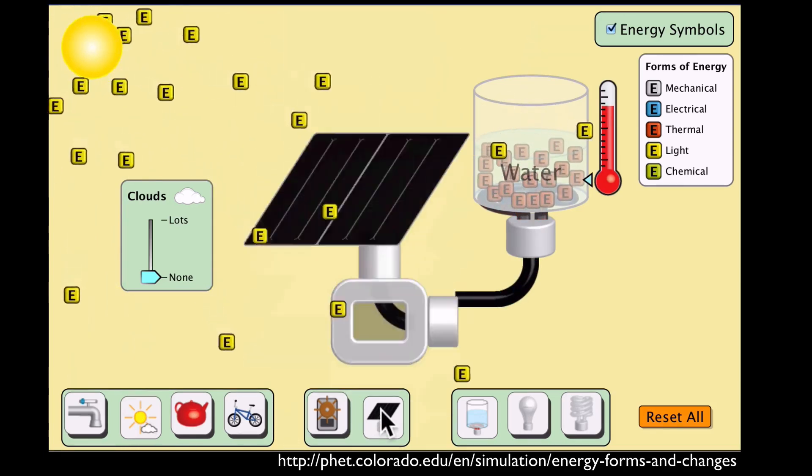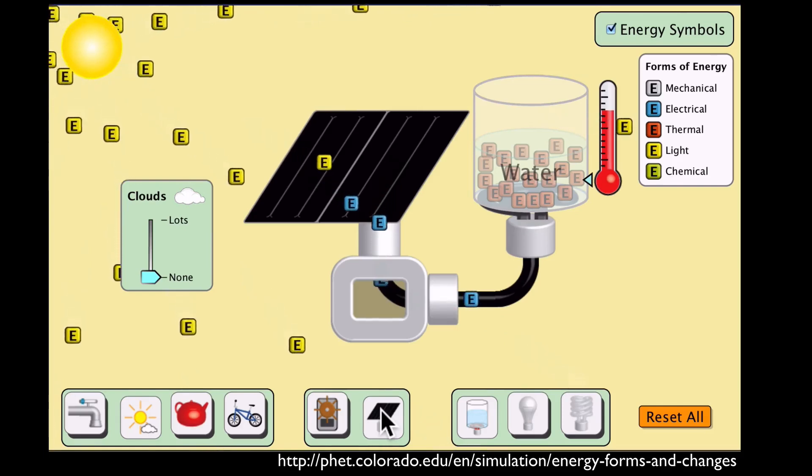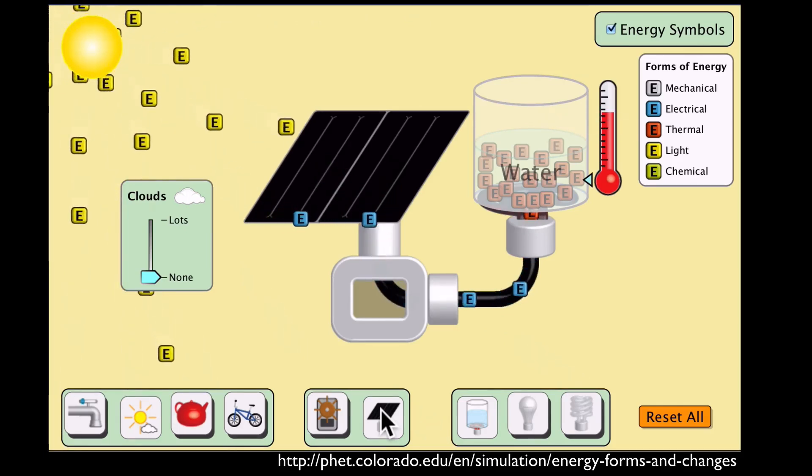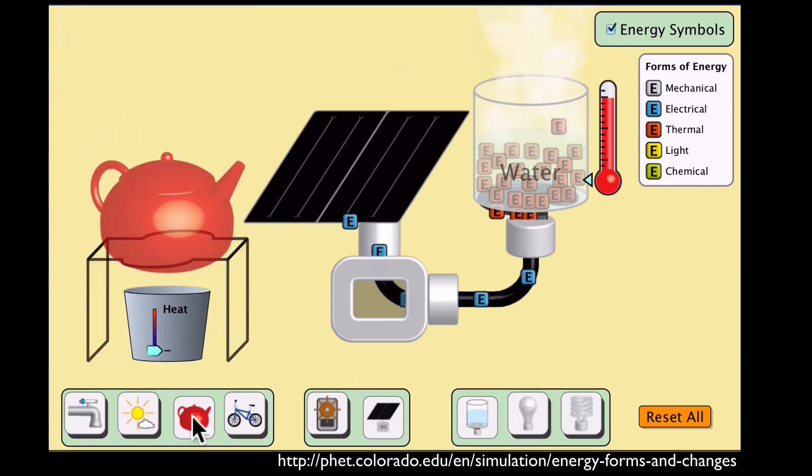Now let's say we change that source of energy to solar energy. It doesn't do anything until I add a solar panel. Now it's going to convert that light energy into electrical energy, and that electrical energy again is going to heat up the water. You can see that the amount of energy that we have is being conserved.